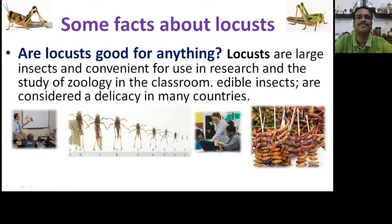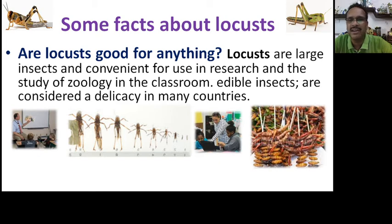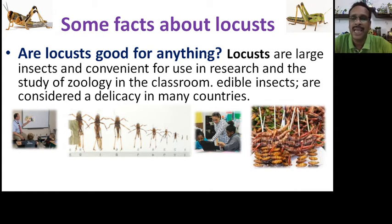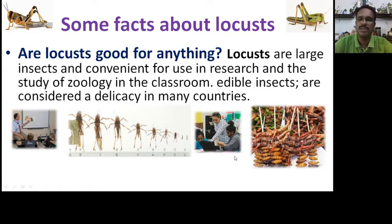Are locusts good for anything? Despite the enormous damage they cause to agriculture, locusts are large insects convenient for use in research — as specimens in zoology and entomology labs and in classroom study. They are also edible insects with a high protein content — around 65 percent protein — and are considered a delicacy in many countries, with a good number of people eating them.